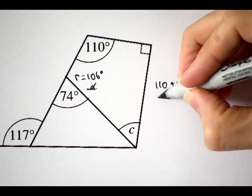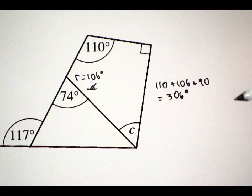Then 106 plus 110 plus 90 makes 306, leaving 54 degrees for C.